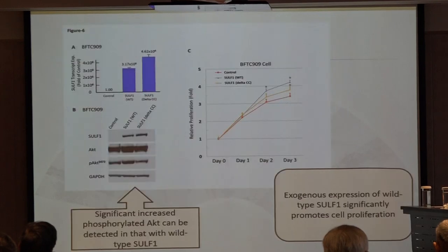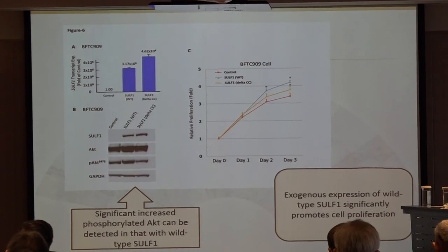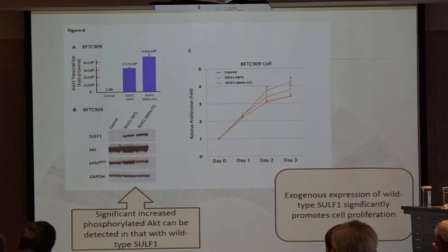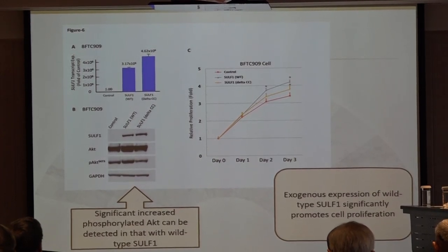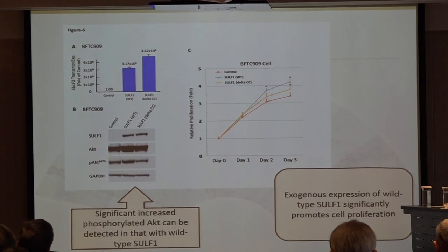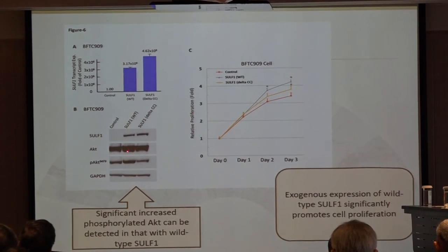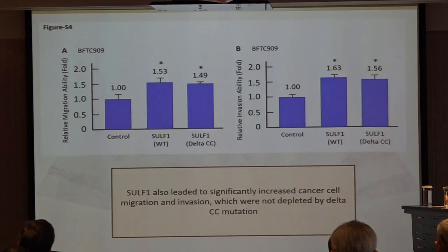Not only did we perform knockdown experiments, we also performed gain-of-function experiments. We used the BFTC 909 cell line, which is special to our country, and found significant increase of phosphorylated AKT after detection in the SOFTIN1 group. When we added wild-type SOFTIN1, phosphorylation increased and cell progression was promoted. Migration and invasion experiments also confirmed that wild-type SOFTIN1 increases cancer cell migration and invasion.